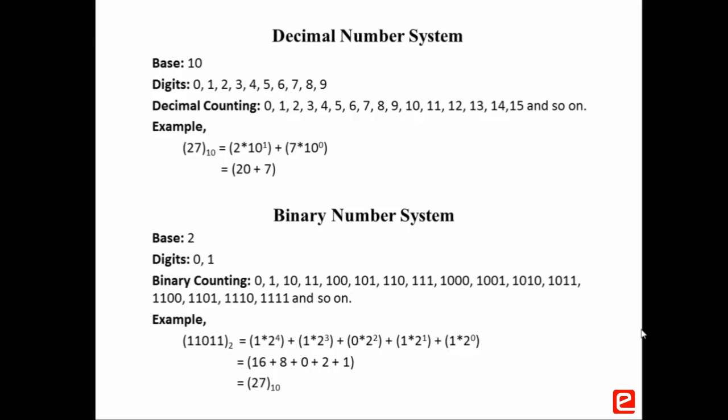Consider an example: 11011 to the base 2, which can be expanded as 1 into 2 to the power 4, plus 1 into 2 to the power 3, plus 0 into 2 to the power 2, plus 1 into 2 to the power 1, plus 1 into 2 to the power 0, which equals 16 plus 8 plus 0 plus 2 plus 1, which is 27 to the base 10.